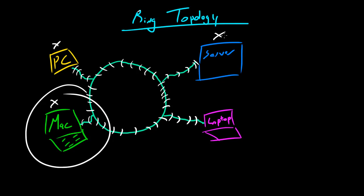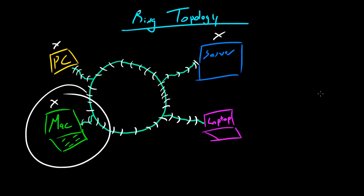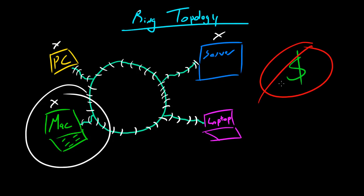Overall, the ring topology is better than a bus topology because it can handle higher volumes of data. But the negative part is that it's usually a lot more expensive than a bus topology. So if you're choosing between a bus and a ring for your home network — if you're not worried about money, go with a ring topology; if you are worried about money, you can go with a bus topology.